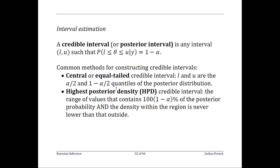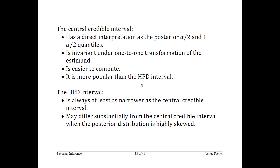The HPD interval is extended until its area reaches 1 minus alpha. The central credible interval is simpler and invariant to transformation, but the HPD interval will often be narrower. They can be fairly different if the distribution is skewed. Note that for the HPD interval, you can get disconnected sets if the posterior distribution is multimodal.